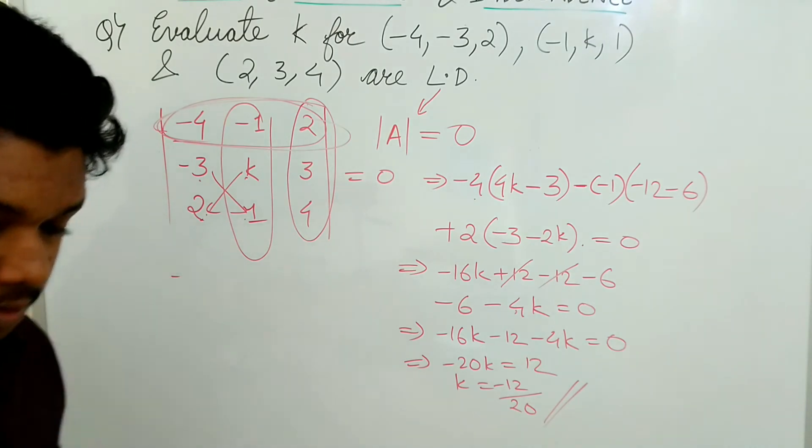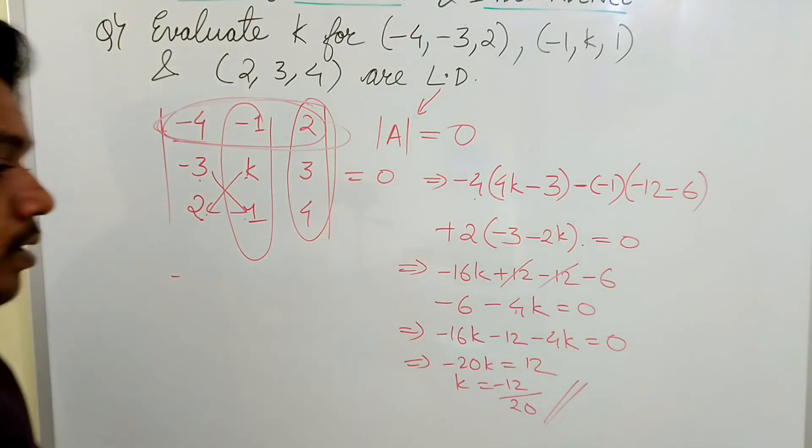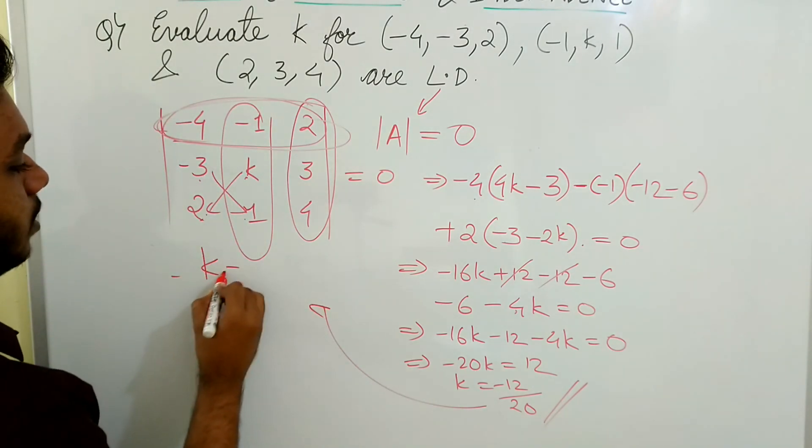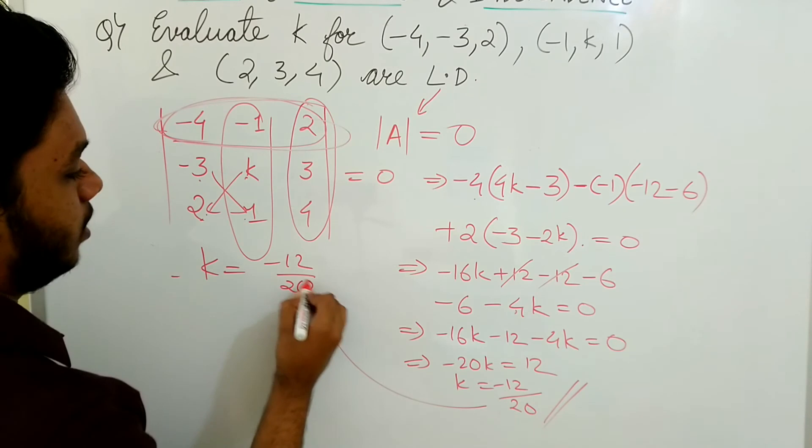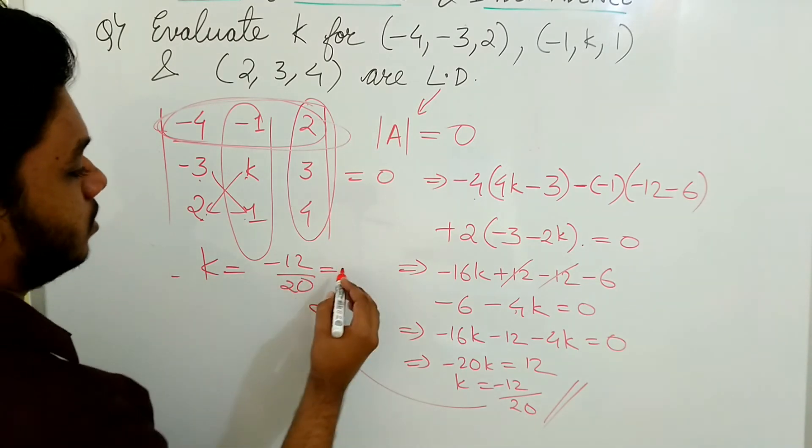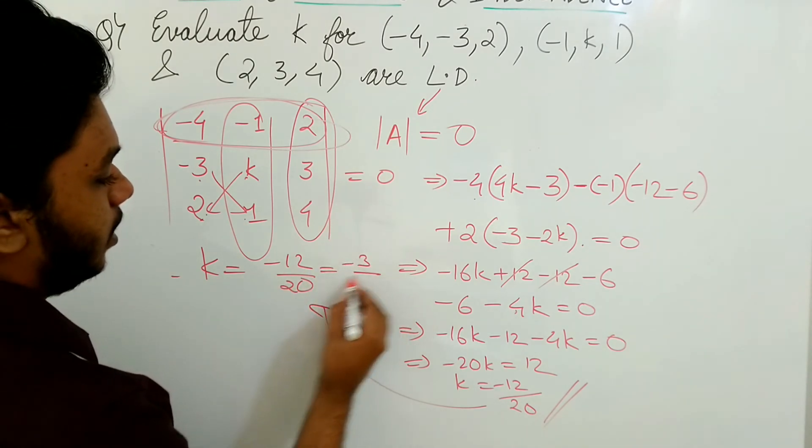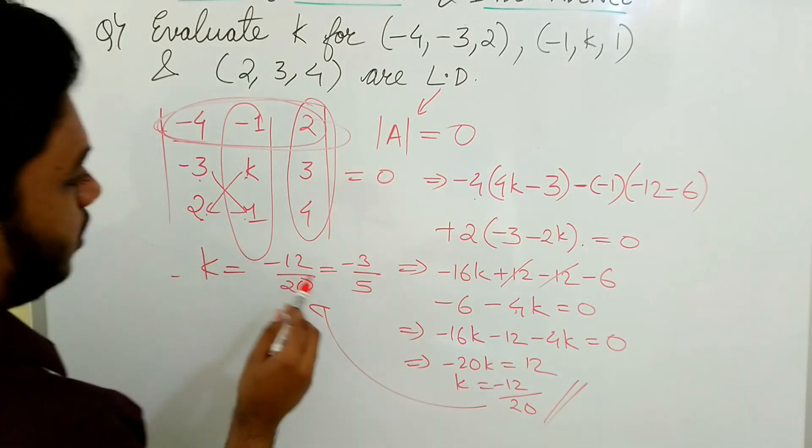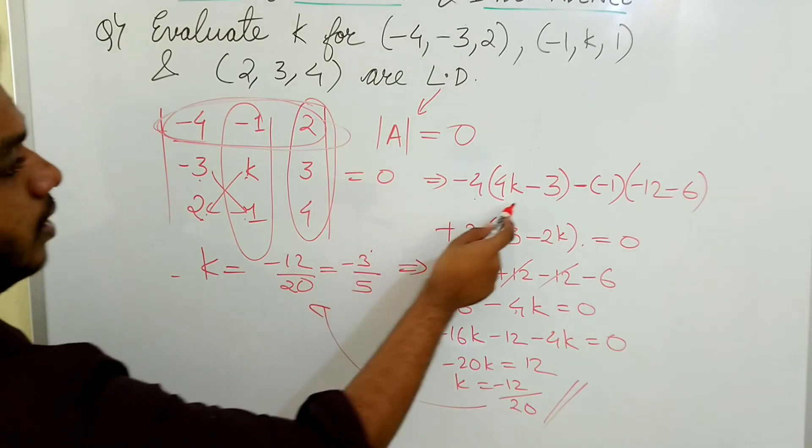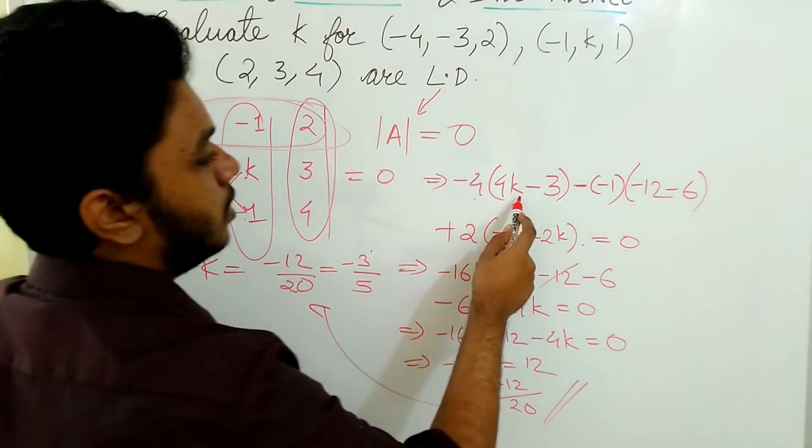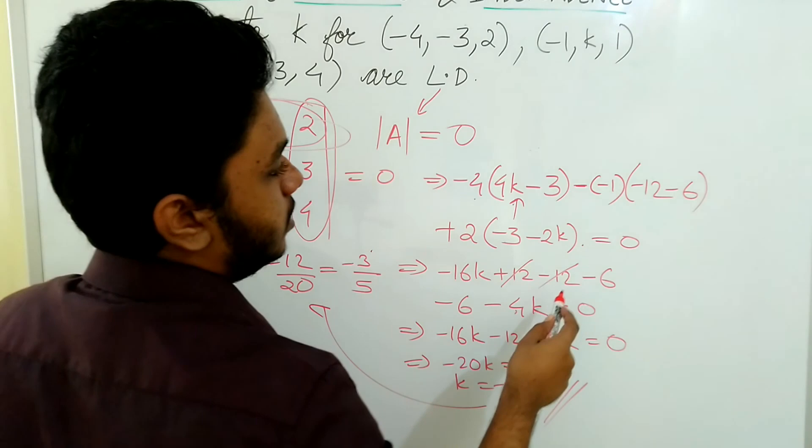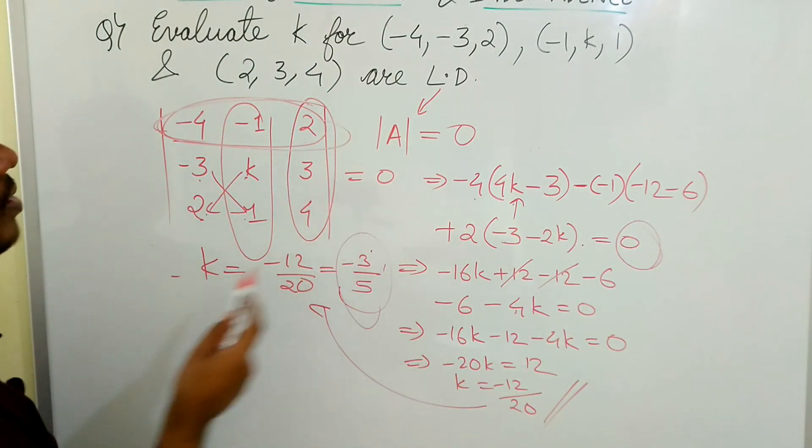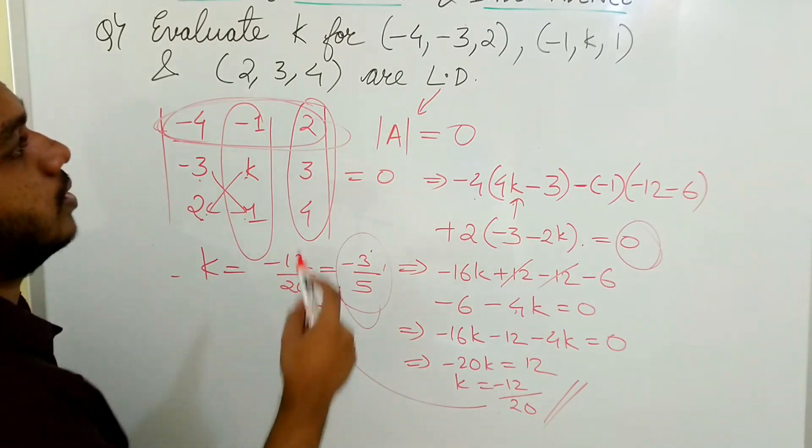So it will be -12 by 20. The k value is equal to -12/20, which I can reduce as -3/5. In order to check your answer, you can just put it here and check whether you are getting 0. If you are getting 0, then your answer is correct. This is how you have to do whenever you get this type of problem.